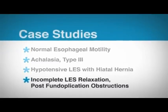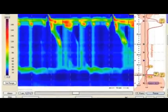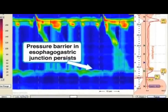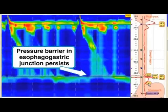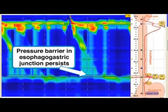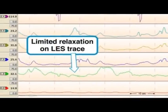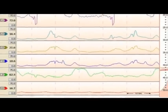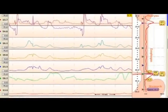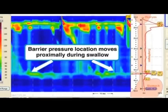Incomplete LES relaxation, resulting from post-fundaplication obstructive changes. In this post-operative case, the pressure barrier at the EG junction persists at a time in the swallow sequence when the LES would normally relax. The sphincter appears to relax in the line tracing, but the high-resolution view shows that the barrier pressure region has moved proximally during this phase, causing symptoms of dysphagia.